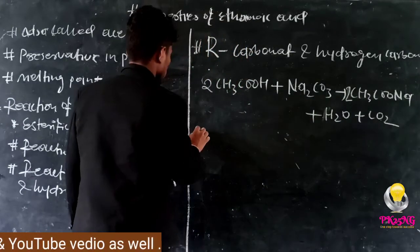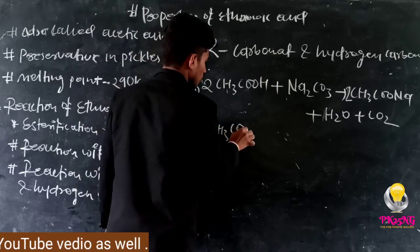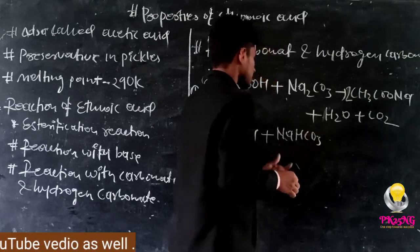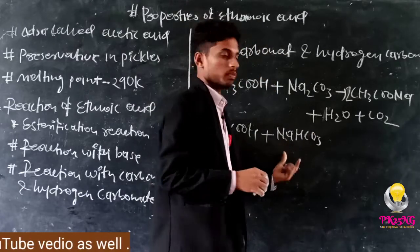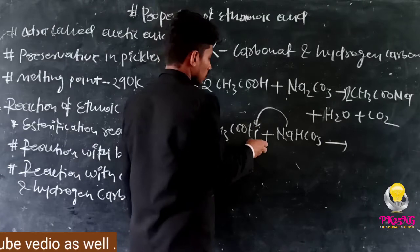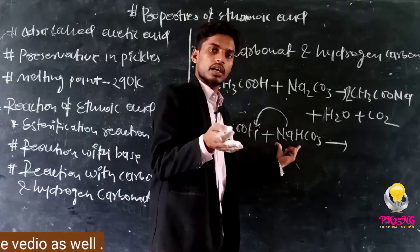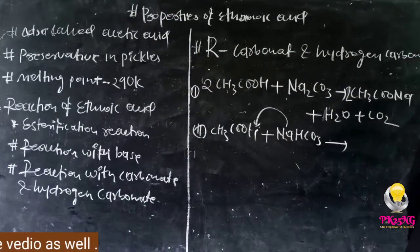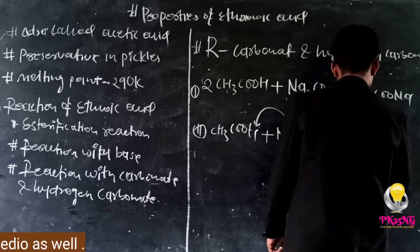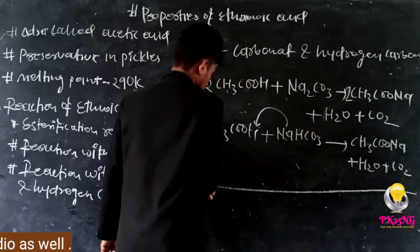The other reaction with sodium bicarbonate: CH3COOH, that means ethanoic acid, reacts with NaHCO3, that is sodium bicarbonate or baking soda. When we do this reaction, then what will happen? Simple: sodium will be added, it will be CH3COONa plus H2O plus CO2. So this reaction is complete.